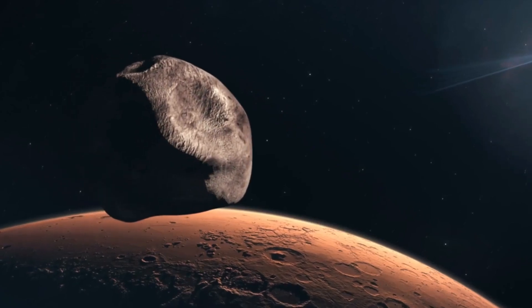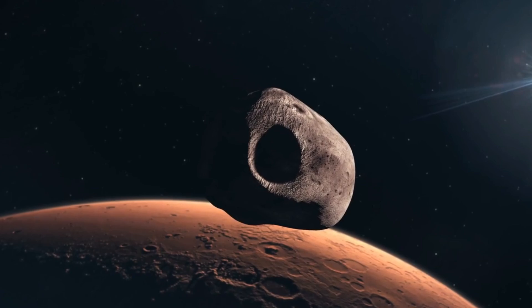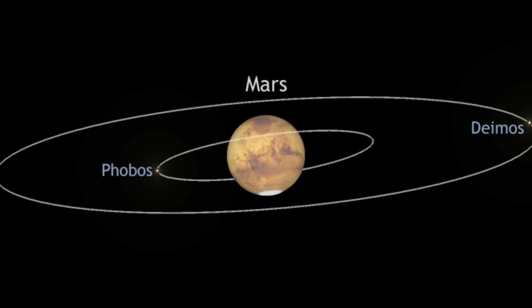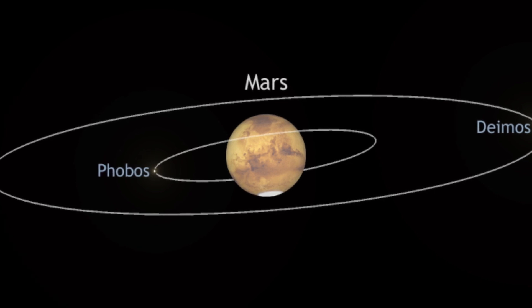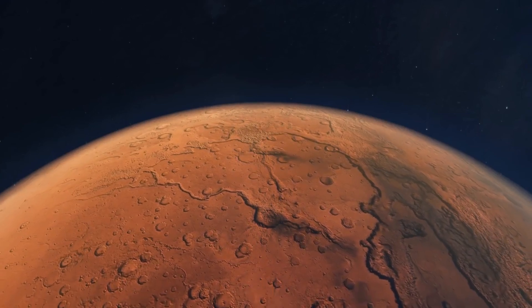If Phobos and Deimos were indeed captured asteroids, we would anticipate their orbits around Mars to be more erratic and eccentric. Surprisingly, both moons follow relatively circular paths, which raises questions about this theory. This regularity suggests that they may have been in orbit around Mars for a significant period, allowing gravitational forces to stabilize their trajectories.